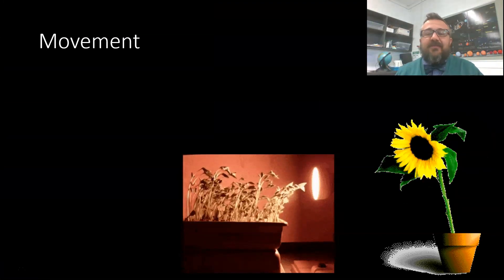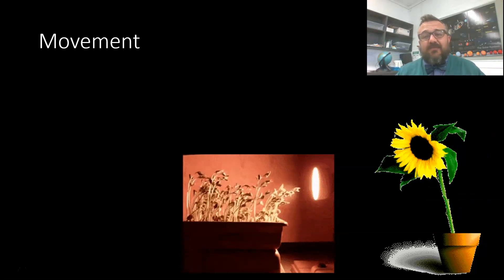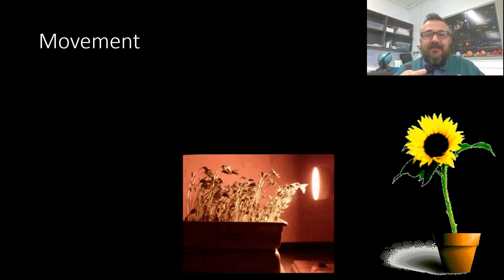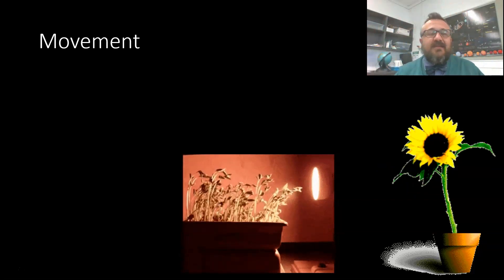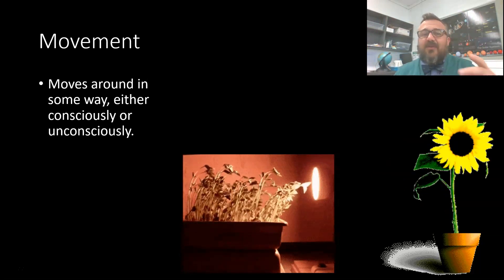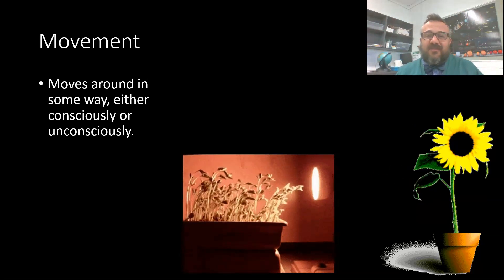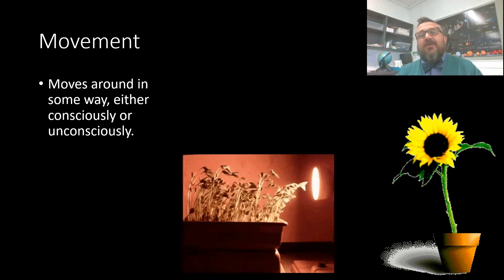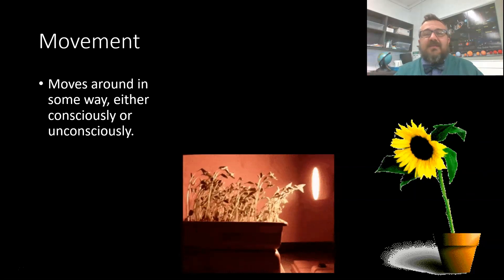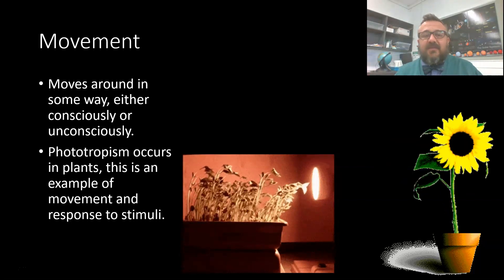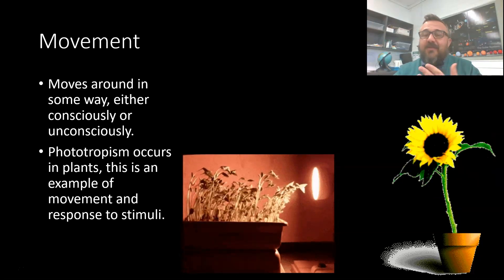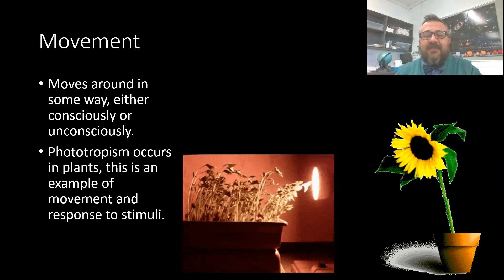Here we've got a couple of examples of plants moving. Sunflowers, for example — they visibly follow the sun from east to west throughout the day. When we say movement, it means it moves around in some way, either consciously or unconsciously. Plants don't get up and walk around, but they still exhibit movement. Bacteria and amoeba all move towards different nutrients. Phototropism occurs in plants, and that's a fun one because it's a combination of both movement and response to stimuli.